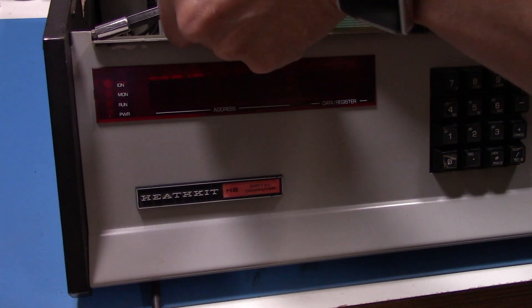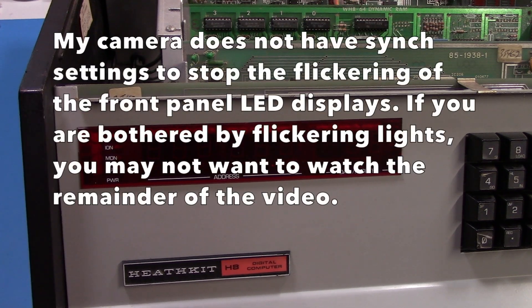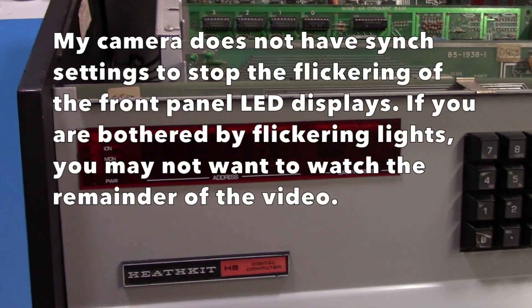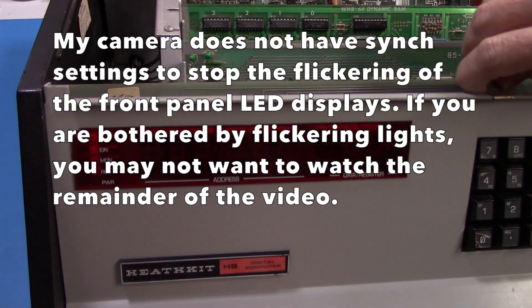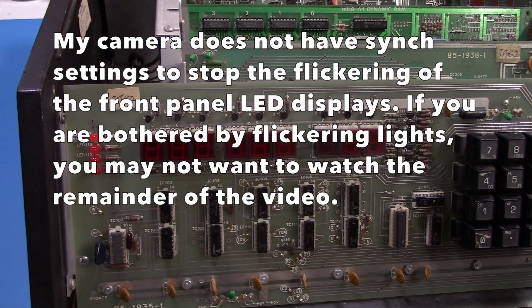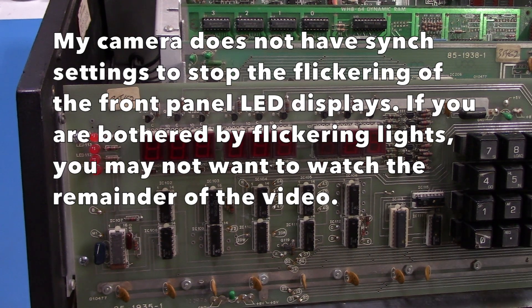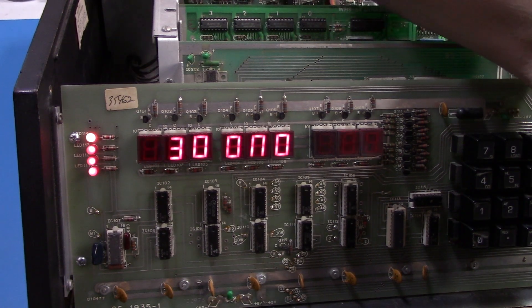One of the things that was bothering me that you noticed in the last video was that there are LEDs that are partially out on the front panel. We replaced a couple of the single LEDs but the seven segment LEDs have some problems too. Two of them actually have missing segments.